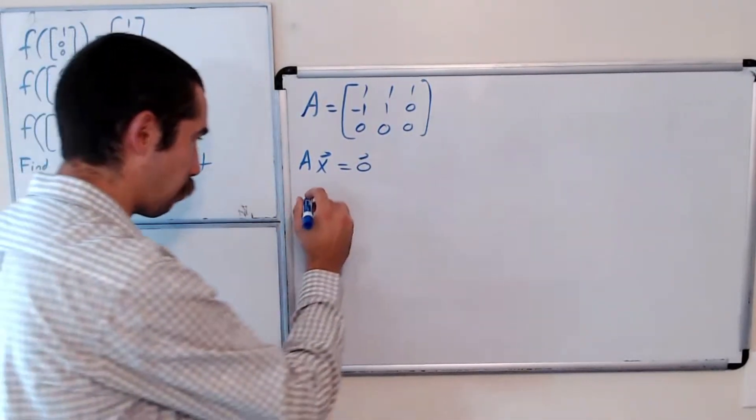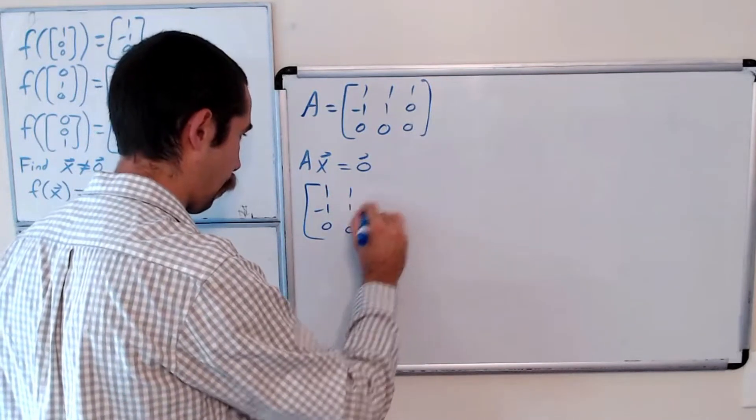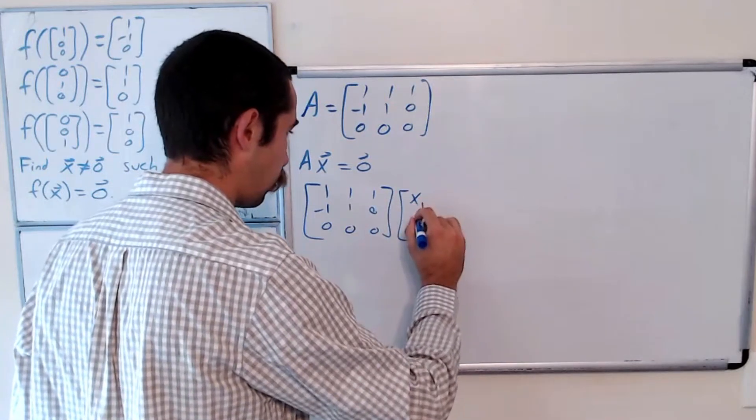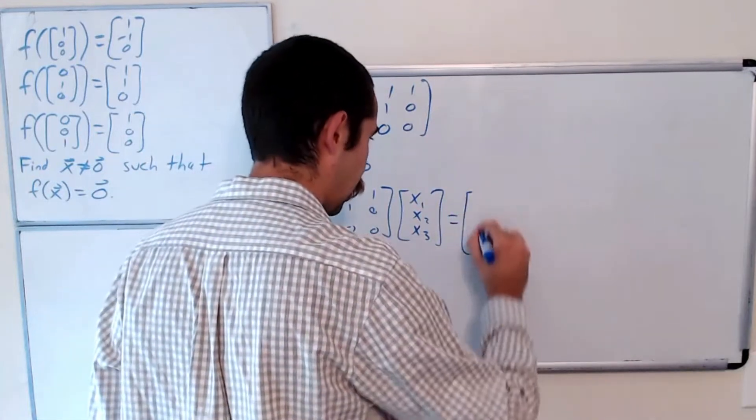Okay, so let's just work this through. So A times the vector (x1, x2, x3) is equal to the 0 vector.